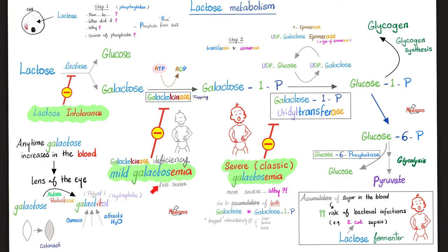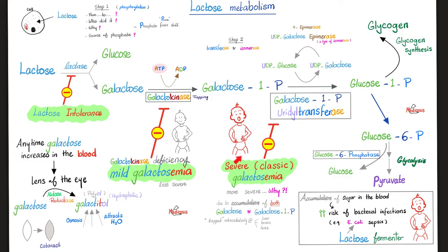Why is classic galactosemia more severe? In mild galactosemia, the deficiency in galactokinase means only galactose accumulates. But when you lack galactose-1-phosphate uridyl transferase, both galactose and galactose-1-phosphate pile up. Galactose-1-phosphate is more toxic because it is phosphorylated — it is trapped inside the cell and cannot exit. The cell membrane allows galactose to pass but not galactose-1-phosphate, so it becomes trapped in liver cells, brain cells, and lens cells. That's why this deficiency is more dangerous than galactokinase deficiency.